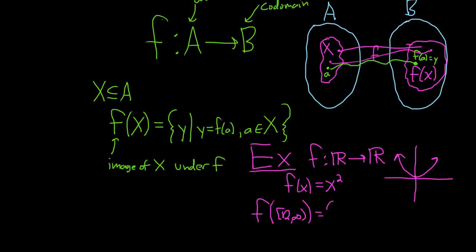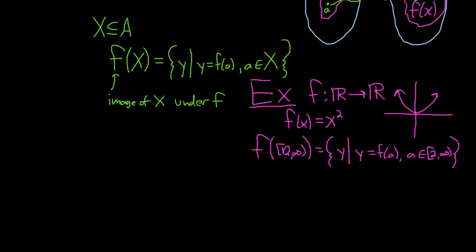So this will be the set of all y values, just using the definition, such that y equals f of a, where a is in the set 2 to infinity, just straight up using the definition. Very carefully using the definition. So this is equal to the set of all y values such that, let's see, y equals f of a. So f of a is a squared, so it's just y equals a squared, a in the set 2 to infinity.